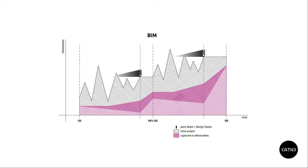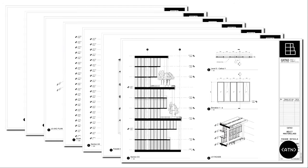Streamlining documentation feeds back into the design process — it frees up designers to spend less time drawing plans line by line and more time on creative problem solving. That's the simple goal of BIM in practice, regardless of whether you're using it to collaborate internally or externally. We can automate workflows to create and update drawings without it being a major problem, since everything refers back to the 3D model.